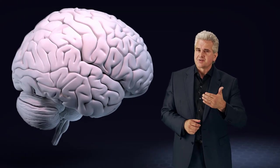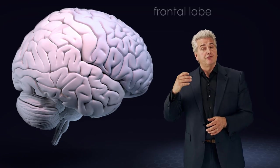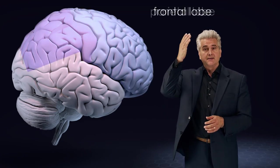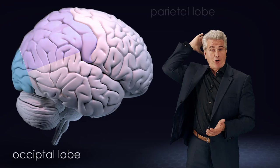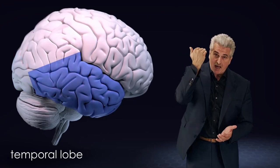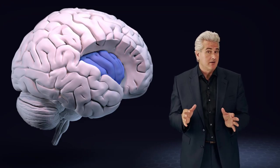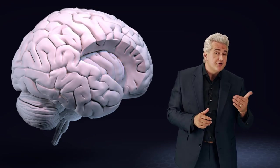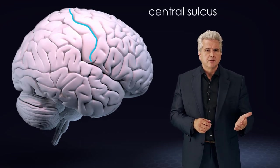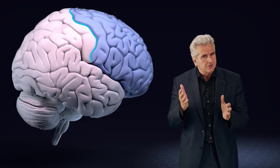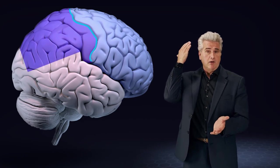Each cerebral hemisphere is divided into the frontal, the parietal, the occipital, temporal and insular lobe via sulci and fissures. The central sulcus separates the frontal and the parietal lobe.